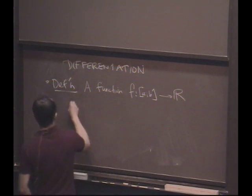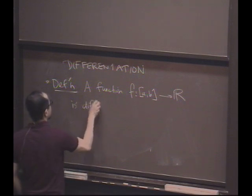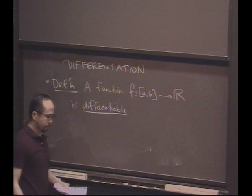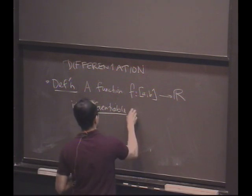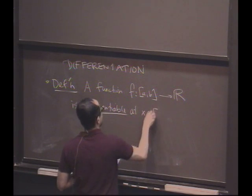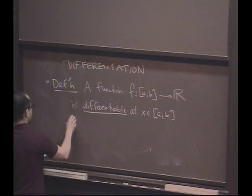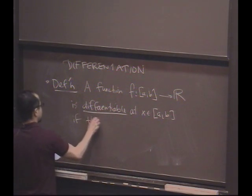We're going to say that this function is differentiable at x in this interval [a,b] if this limit exists. So notice that whatever I'm about to say, we're going to call this function differentiable if some limit exists.